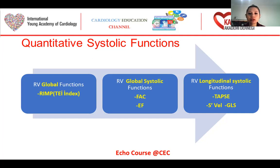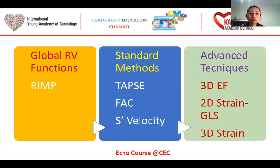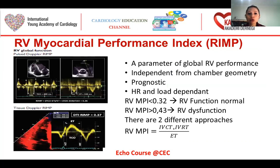When we talk about quantitative systolic functions, we can divide it into three groups: RV global functions, RV global systolic functions, and RV longitudinal systolic functions. For RV global functions, we can use the Tei index — myocardial performance index. For global systolic functions, we can use fractional area change and ejection fraction. For longitudinal systolic functions, we can use the Tei index, S-velocity, and global longitudinal strain. The right ventricular myocardial performance index is a global parameter of RV performance. It is independent from chamber geometry, prognostic, and heart rate- and load-dependent.